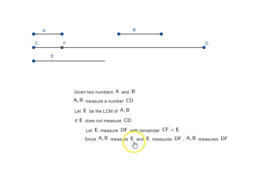Now, since A and B measure E, and E measures DF, that means A and B measure DF. But we have also seen that A and B also measure CD.